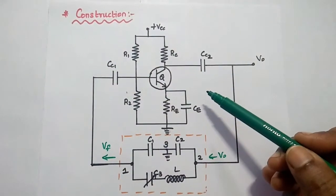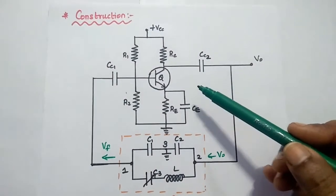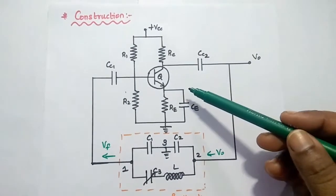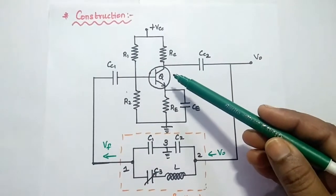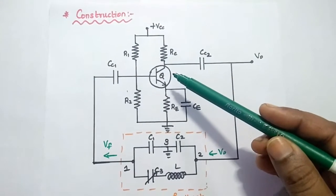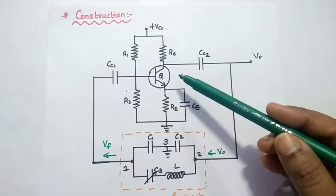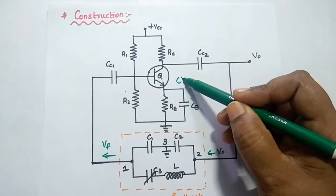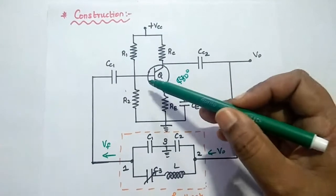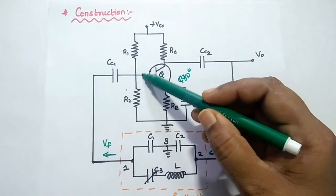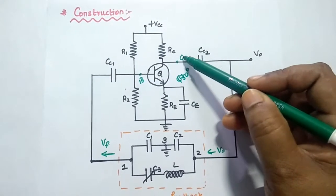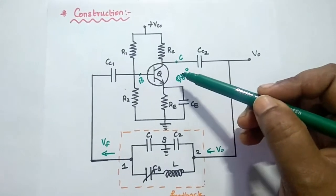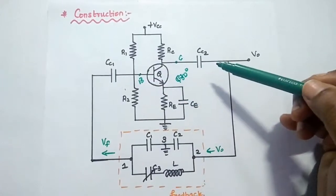The CLAP oscillator consists of two stages: an amplifier stage and a feedback stage. In the amplifier circuit, it uses an active device — a transistor in CE (common emitter) configuration. In this mode, it introduces a 180-degree phase shift between input and output. The input is at the base and the output is at the collector side.